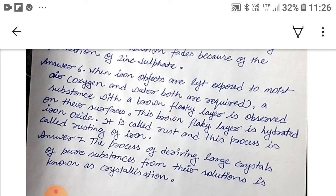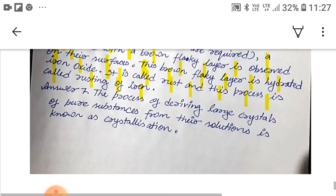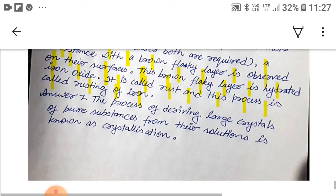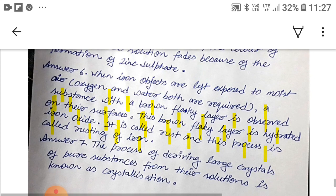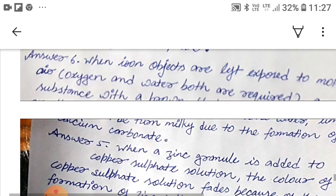So we were reading from here, a substance with a brown flaky layer is observed on their surfaces. This brown flaky layer is hydrated iron oxide, it is called rust and this process is called rusting of iron. Now the question 7 and the last question. Answer 7, the process of driving large crystals of pure substances from their solution is known as crystallization. And the last question, so that's all students for today, thank you class.